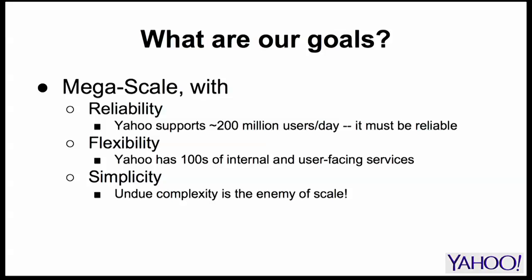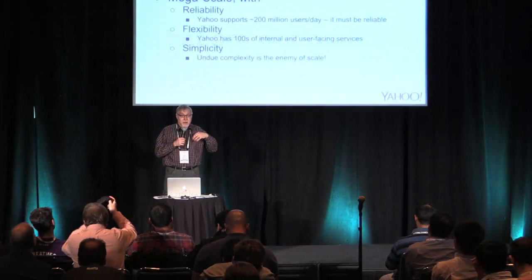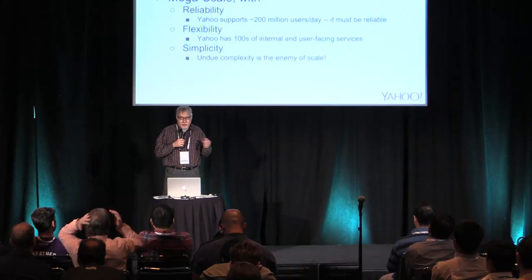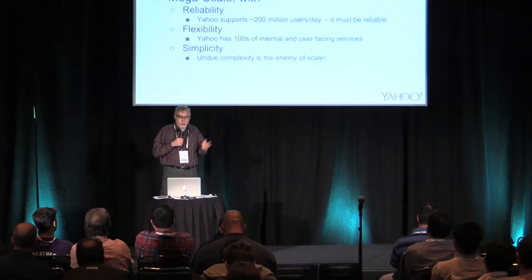Our goals in accommodating Megascale — three goals, probably goals we all have, but at Megascale things are a bit different. We need reliability. Yahoo is large; depending upon who you ask, we're between first and fourth in terms of page views on the web. We need flexibility. We have many properties supporting what our CEO calls the daily habits — things like news, sports, weather, and so on. People depend on those, so we need reliability as well as scale.